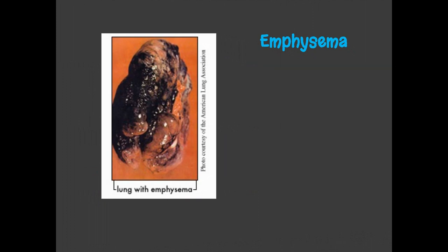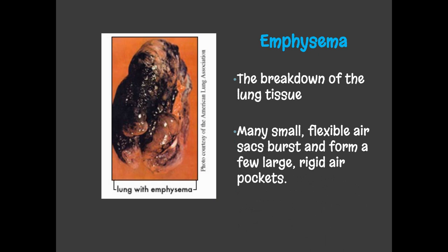This picture is from the American Lung Association and shows a lung with emphysema. Normal lungs that are not from smokers are pink, bright, and vibrant. This is a very damaged lung — emphysema breaks down your lung tissue, and many small flexible air sacs burst and form a few large rigid air pockets. You can see here these air pockets formed on the lung, and it makes it incredibly difficult to breathe.